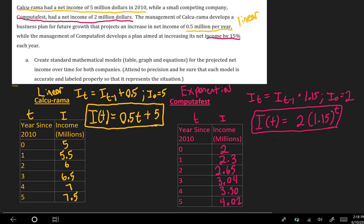And again, we want to compare the two. So notice that computafest started lower, and I can tell that because of this number here being 2, whereas calculorama started higher. But how's it going to look over time is the question that we want to answer. So I'm going to graph both of these in Desmos so that we can see.